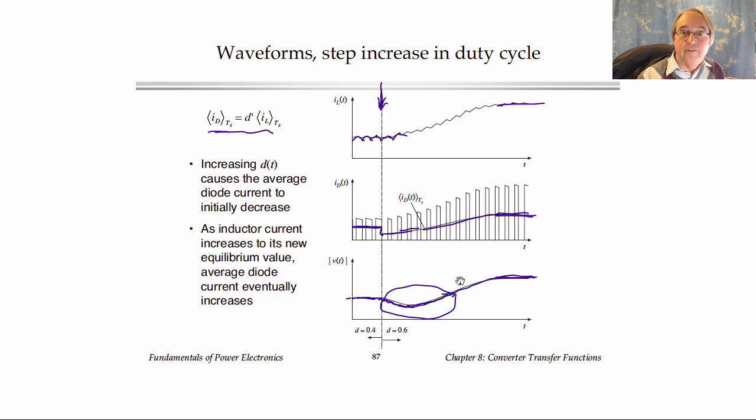Now imagine the effect of this on a feedback loop. We build a control system for our converter that is trying to regulate the output voltage to follow some reference. When the feedback loop sees the output voltage go down, or if the output voltage is less than the reference, then the feedback loop will turn up the duty cycle. So what do you suppose will happen? If we have a wide bandwidth or fast feedback loop, it will see the voltage sag and it will say, the voltage is going down.